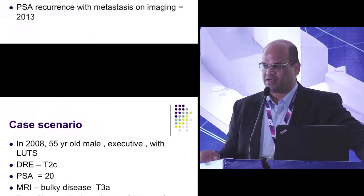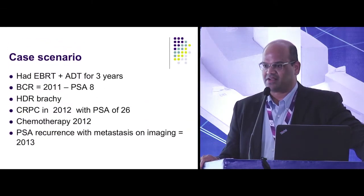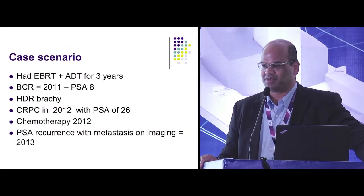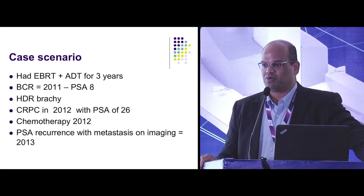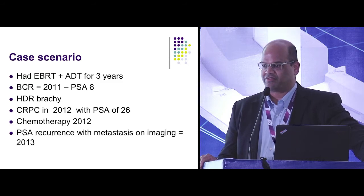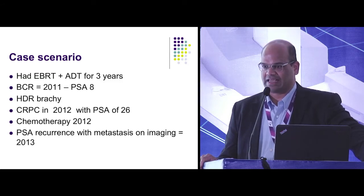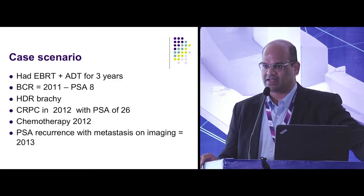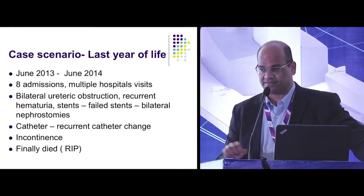The standard at least in Hyderabad is hormone manipulation plus EBRT. Biochemical recurrence occurs the moment you stop the hormone manipulation, then they go for high-dose brachytherapy, the patient recurs, develops castrate-resistant prostate cancer, then PSA recurrence and metastasis, and then comes the final year of his life.